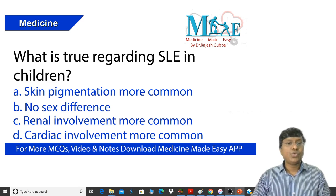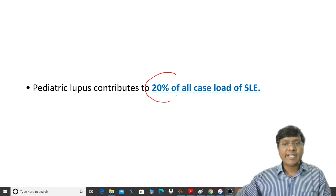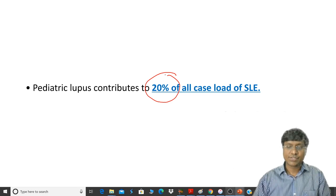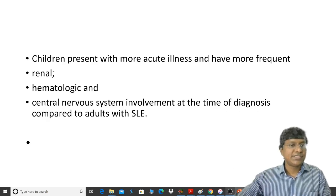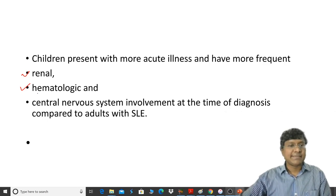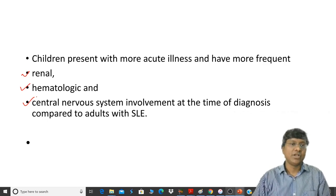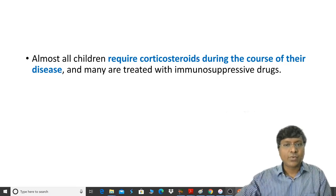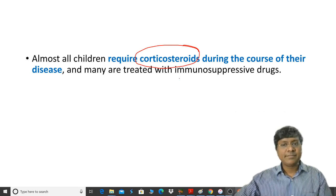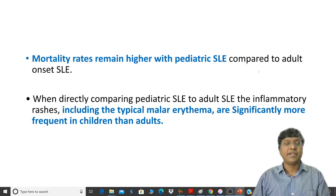Pediatric lupus constitutes nearly 20% of all caseloads of systemic lupus erythematosus. In children, the more frequent manifestations of SLE are lupus nephritis, pancytopenia as part of hematological involvement, and seizures or psychosis as CNS involvement. All of these children require corticosteroids, and some also require immunosuppressive drugs. Corticosteroids are the mainstay of treatment in pediatric SLE.